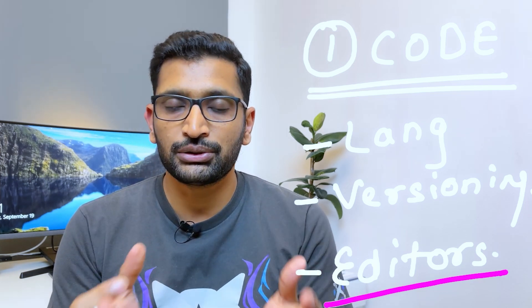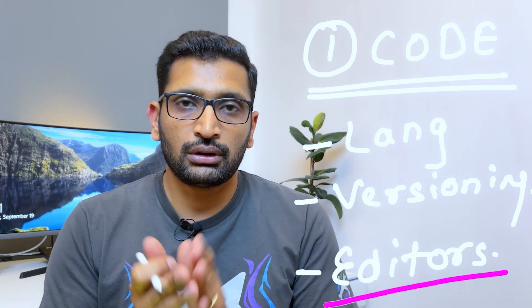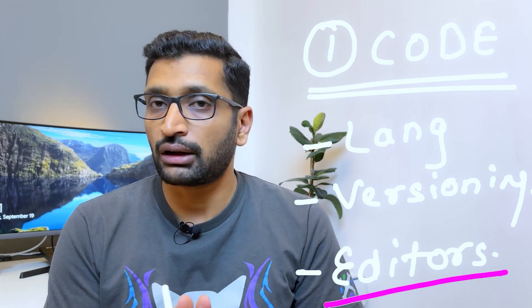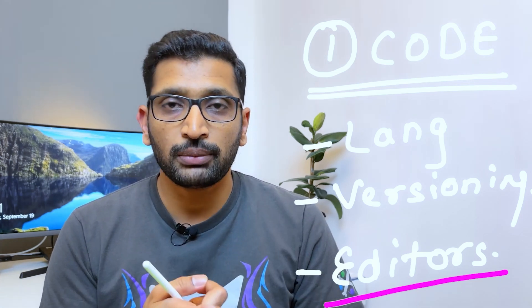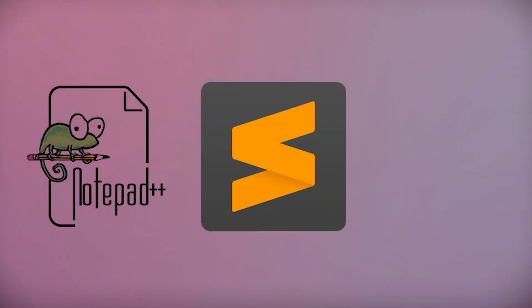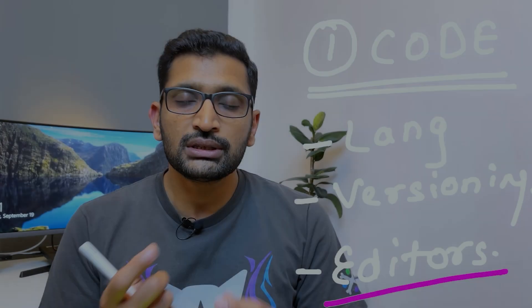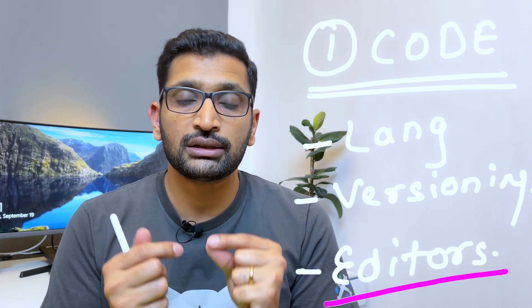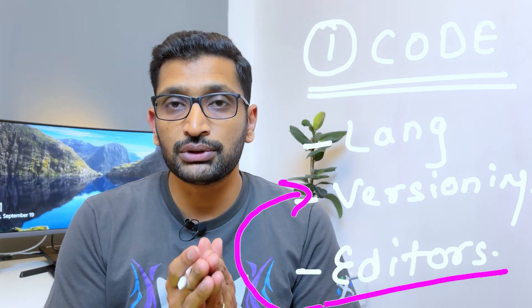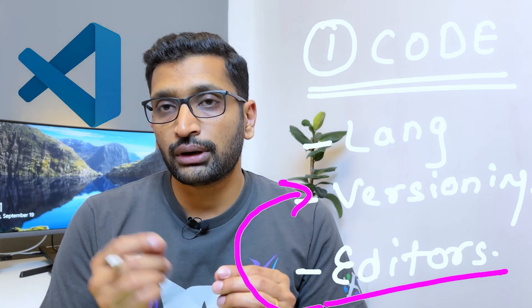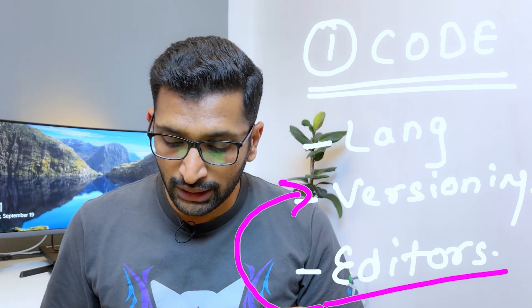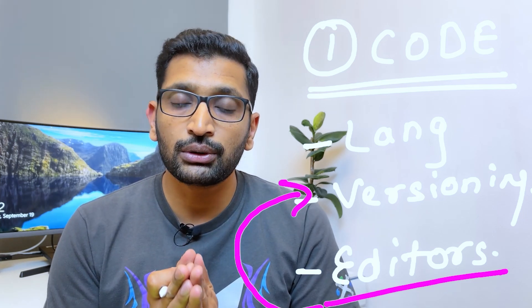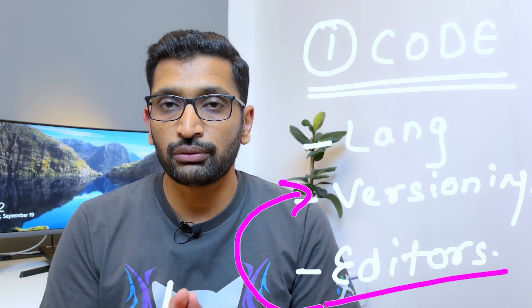Last but not least in this section is editors — what kind of editor should you use? There are quite a few free and open-source tools available, like Notepad++, Sublime, and the most popular one, Visual Studio Code. These editors have really good integration with versioning systems, especially Visual Studio Code. You can integrate your GitHub repository with Visual Studio Code and work with your code with proper version control.